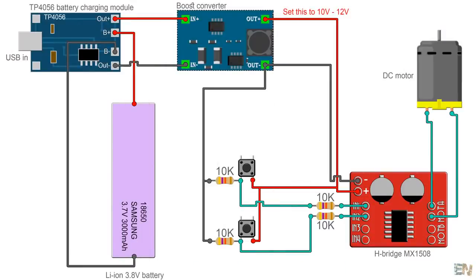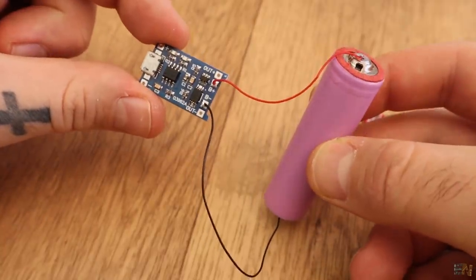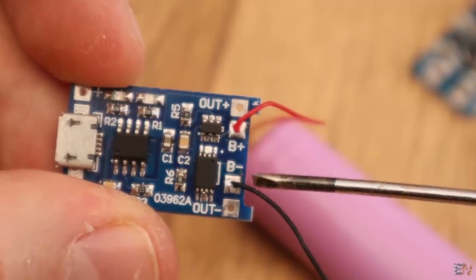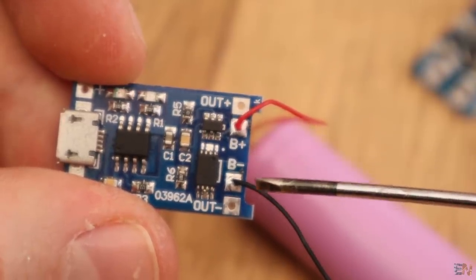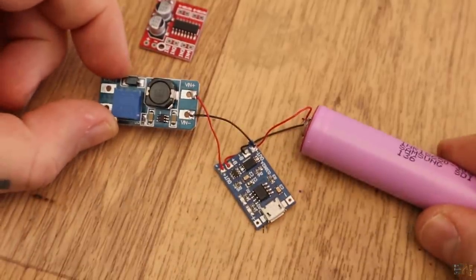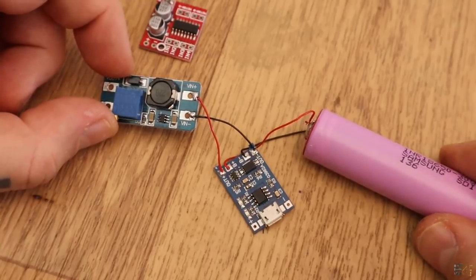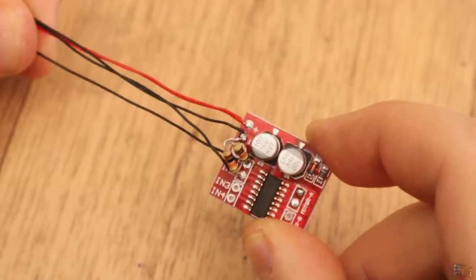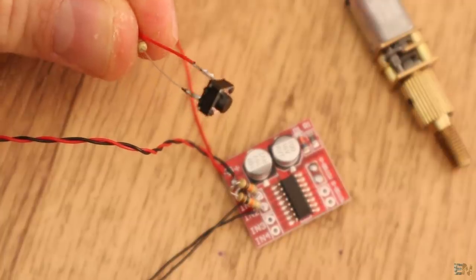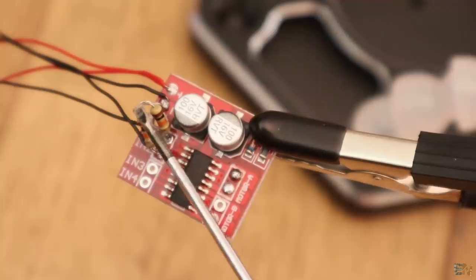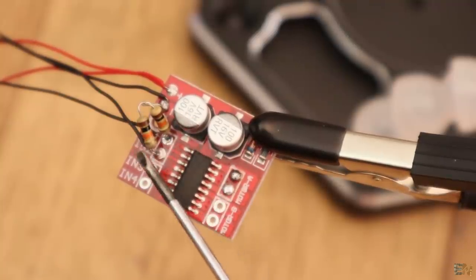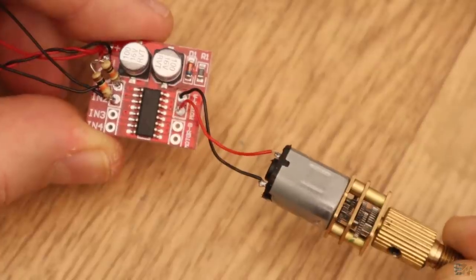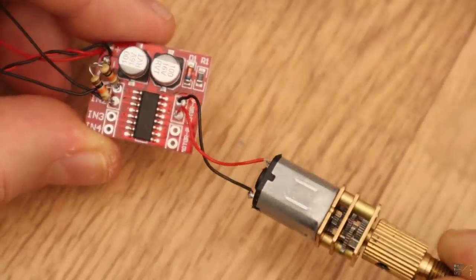See the schematic before starting this project. Okay, now solder the battery to the charging module. You have the B plus and the B minus connectors for that. Now the output from this module is connected to the boost converter input. Then the boost converter is connected to the H-bridge module and to one side of the push buttons. The other pin of the button is connected with a pull-down to the enable inputs of the H-bridge module. Connect the motor to the output of the module and the schematic is done.